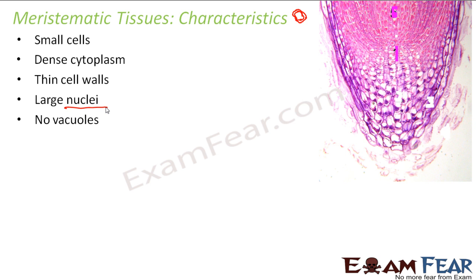Meristematic tissues do not have vacuoles. Vacuoles give rigidity to a cell, but for a meristematic cell we don't want rigidity — the cell needs to be less rigid so it can divide easily. The more rigid the cell, the more difficult it is to divide. So vacuoles are not present in meristematic tissues.